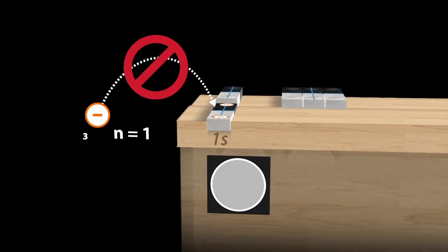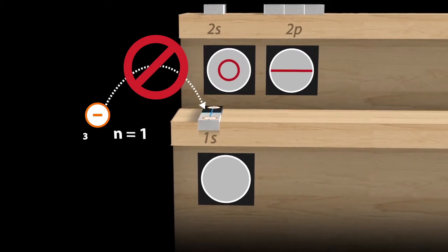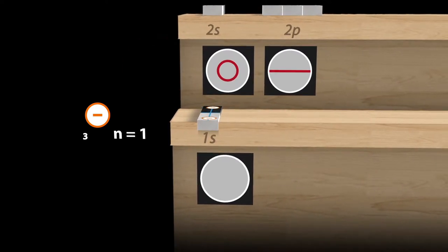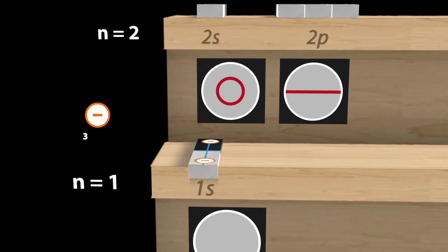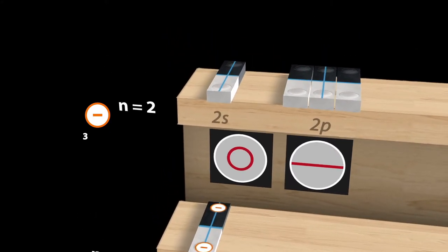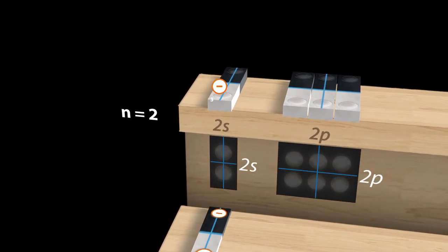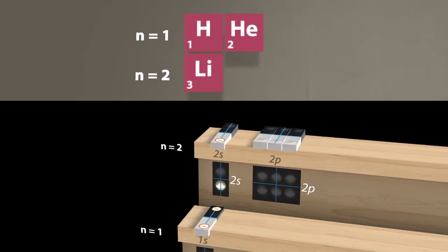The third electron has no place left in the bottom shell. It must occupy a state with one nodal line in the second shell. Again, this is due to the Pauli exclusion principle. Radial nodal lines are more advantageous than azimuthal lines in terms of energy. This is why the 2s orbital is occupied first, and not the 2p orbital. This single electron is very reactive. It is thus the highly reactive alkali element, lithium.